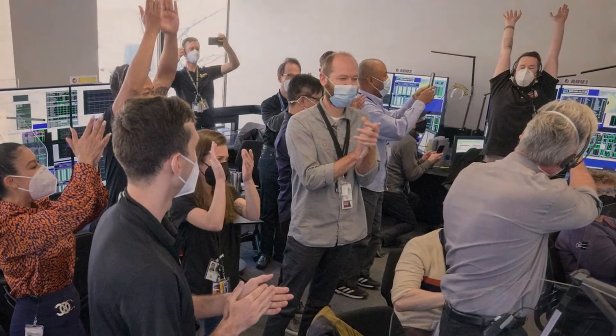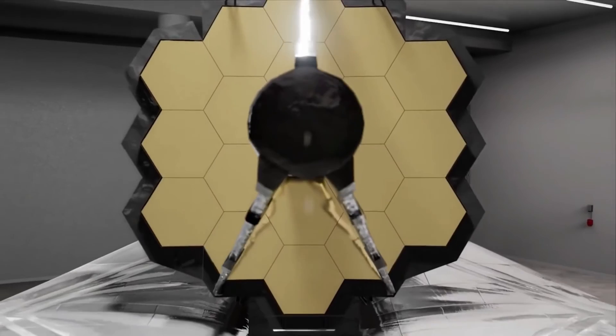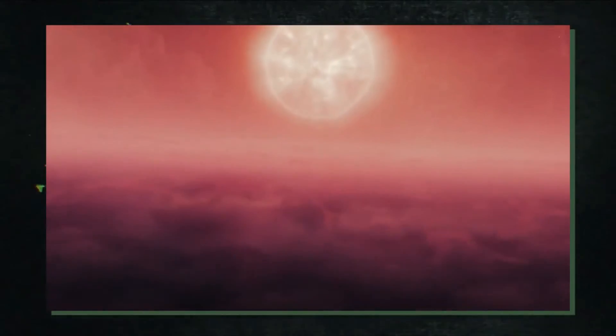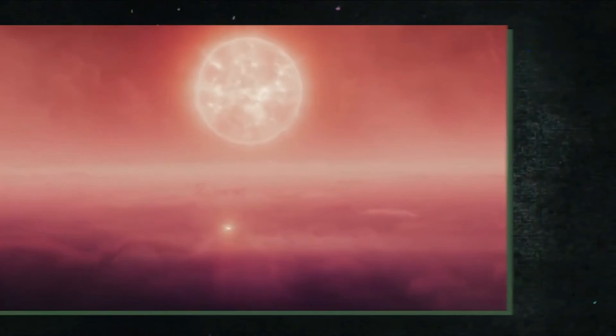But even with the JWST, finding any extraterrestrial life on Proxima b is still a challenge. The telescope can only observe the planet for a limited amount of time each year because of its orbit around the L2 point.